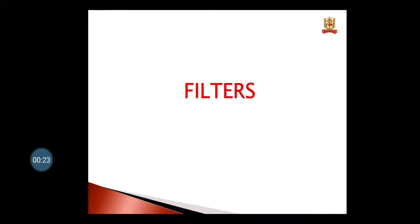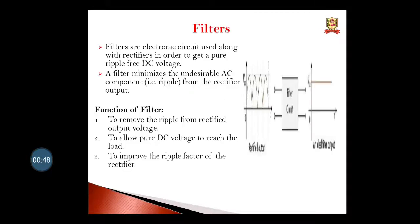Filters are the circuits which are connected after the rectifier, basically in a DC power supply. The rectified output is basically called pulsating DC, so that is not a complete DC. To convert it into a more complete DC, or to be very close to DC, filter circuits are connected at the output of the rectifiers. Filters are the electronic circuits used along with rectifiers in order to get a pure ripple-free DC voltage.